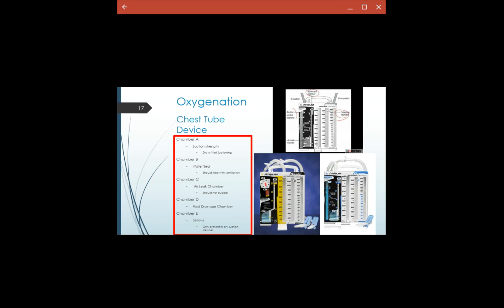If the ball is not going up and down, the system has an air leak and that's bad. Also, if we have an air leak in chamber C, we're going to see bubbling. So normal is no bubbling. Bubbling is going to indicate external air is being sucked into the system. And then we have the fluid collection chamber. What we want to be doing here is marking it every shift for how much fluid we pulled out in order to keep track of the patient's I's and O's.